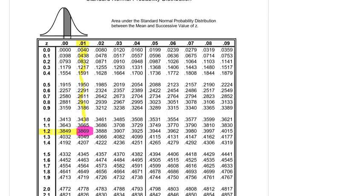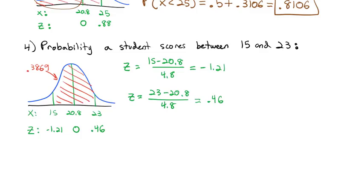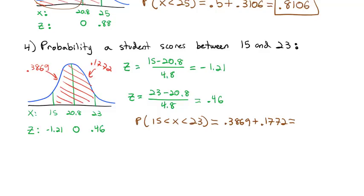We still need to look up z = 0.46. Going across the table, we get an area of 0.1772. We want the area between both values, which includes both halves. So the probability that 15 < score < 23 is 0.3869 plus 0.1772, giving a total area of 0.5641. There's just over a 56% chance a student will score between 15 and 23.